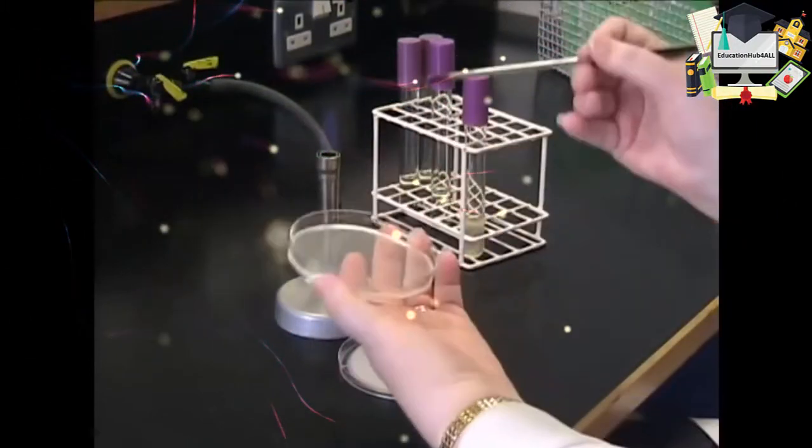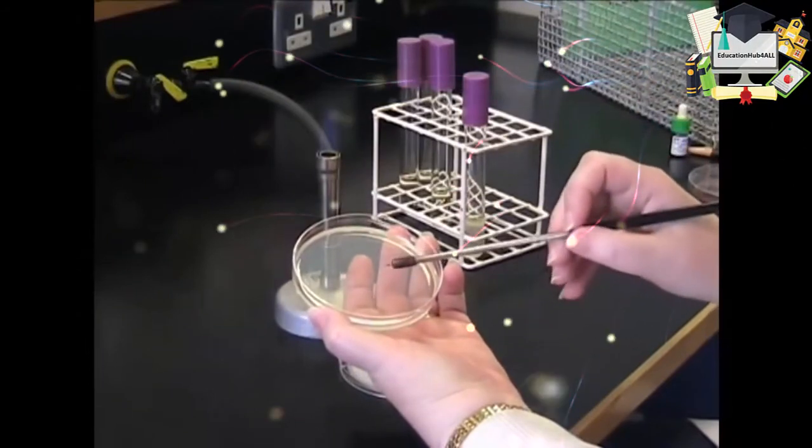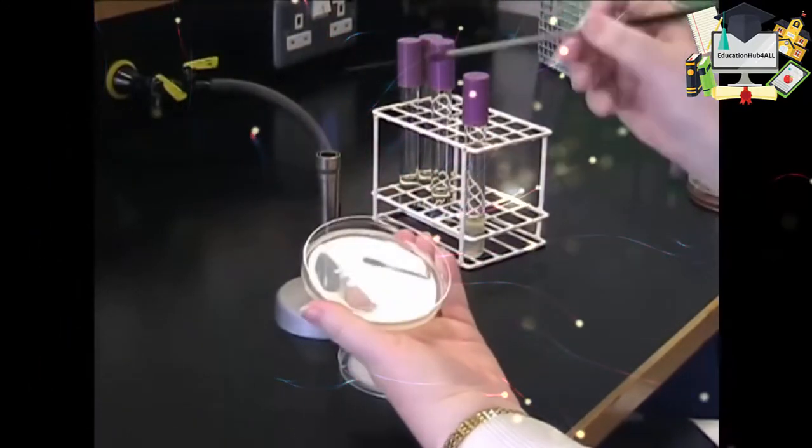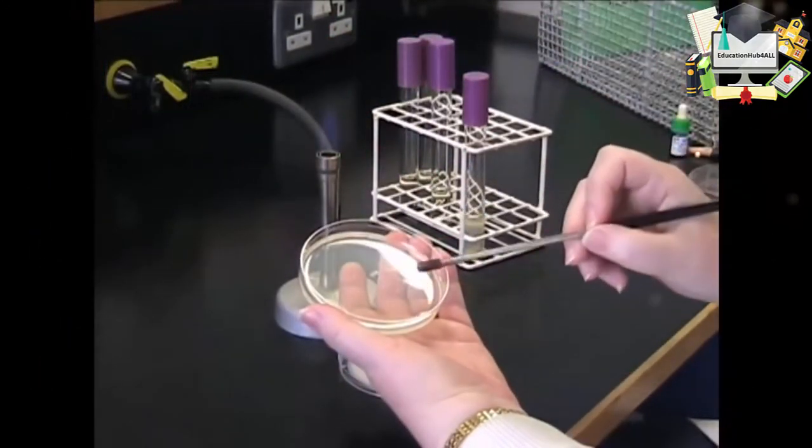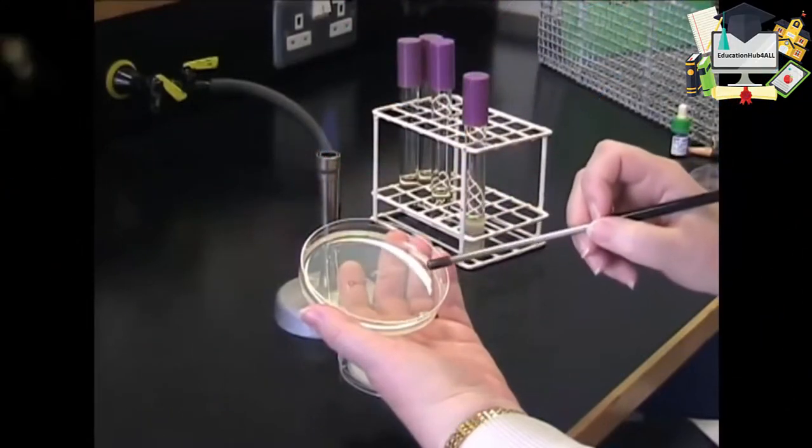You then streak this out onto the plate as before, making your primary streak and then flaming your loop. Rotate the plate. Cool your loop. Take one streak from the primary streak across the plate.